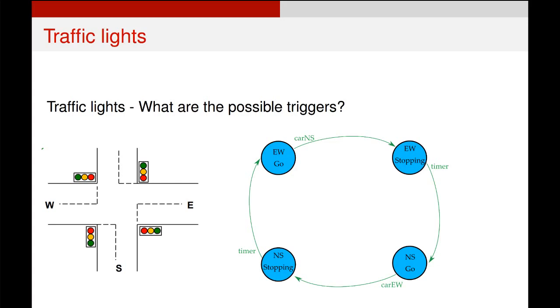So we wait for a little while. When the timer triggers, we go from the stopping state to the go state. And as soon as the go state notices a car traveling perpendicular to it, it will move to that stopping state and allow that car to move.